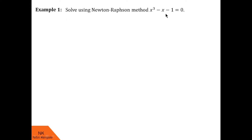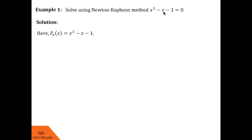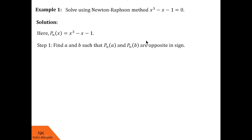In this first example, we are asked to solve the algebraic equation x³ − x − 1 = 0 using Newton-Raphson method. First, we have to find out Pn(x) from this equation. Here, Pn(x) = x³ − x − 1. Now, as per step 1, we have to find points A and B such that Pn(A) and Pn(B) are opposite in sign.